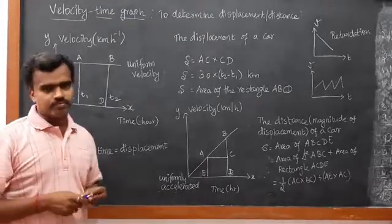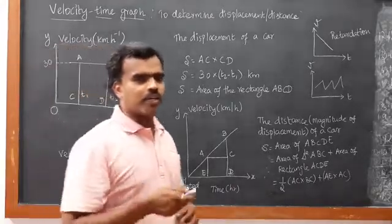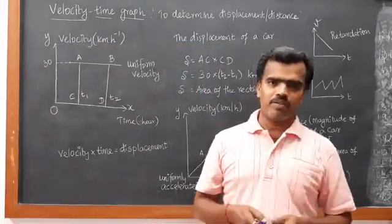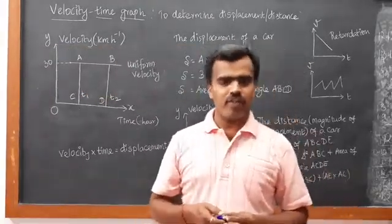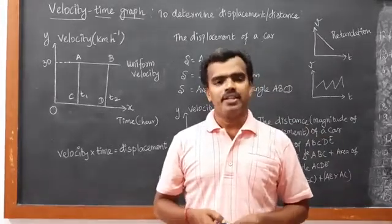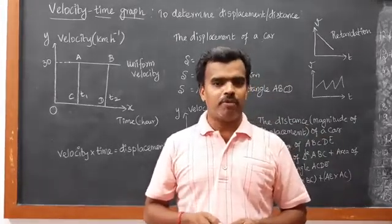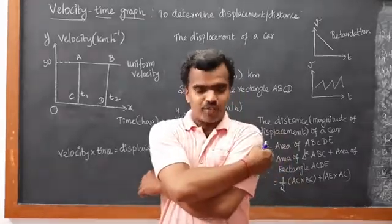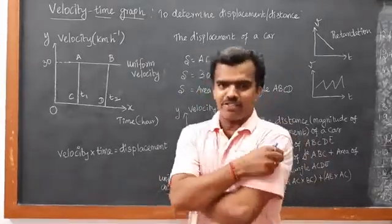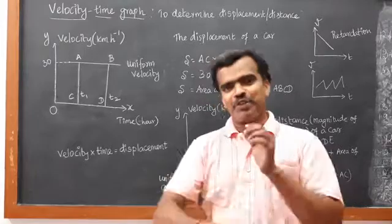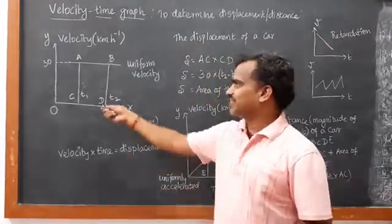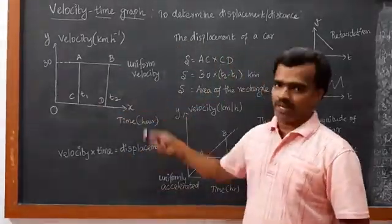A very good example: if you are driving a car and the first hour you cover 40 km, the second hour you cover 40 km, and the third hour you cover 40 km — then we can say that you are traveling at uniform velocity, continuing to drive straight for three hours without changing direction. This is what we call uniform velocity.